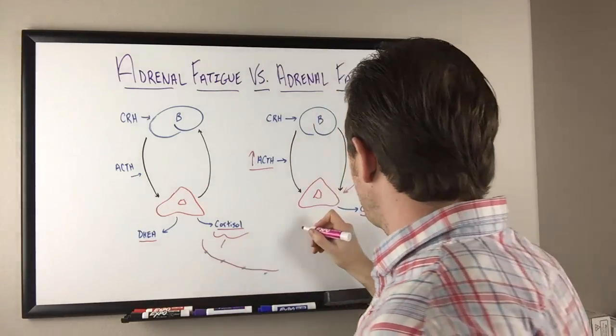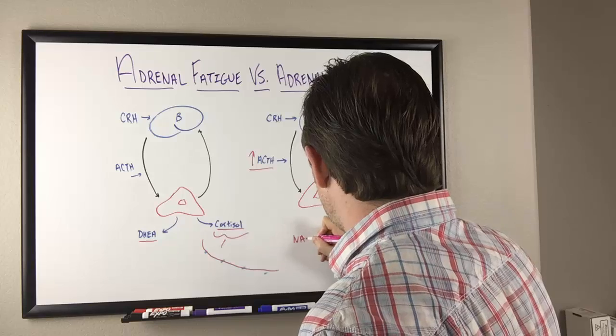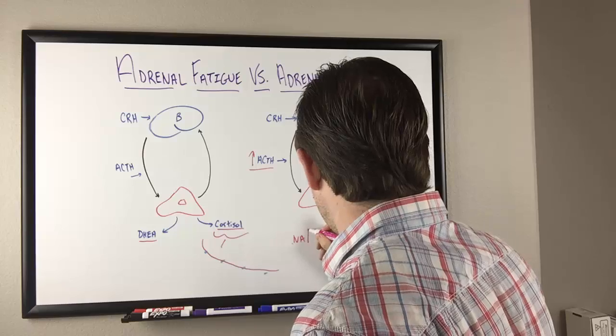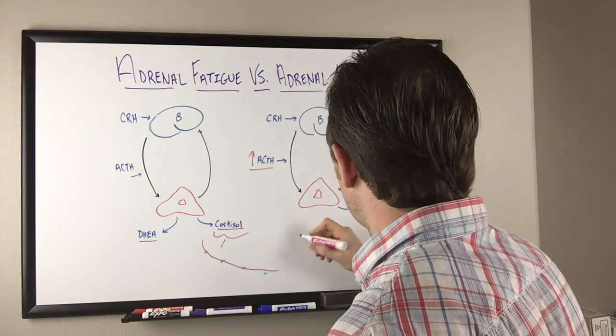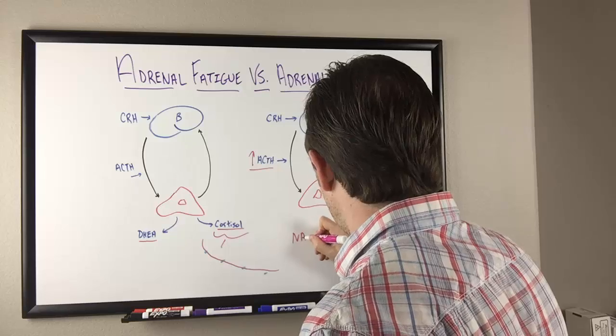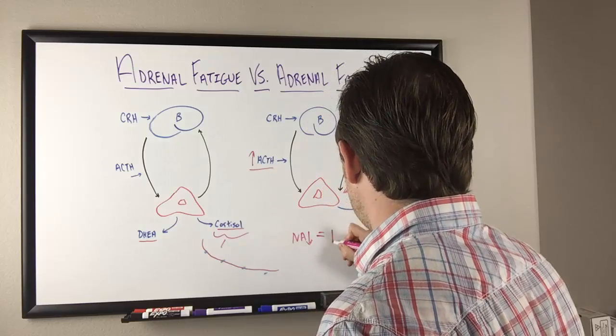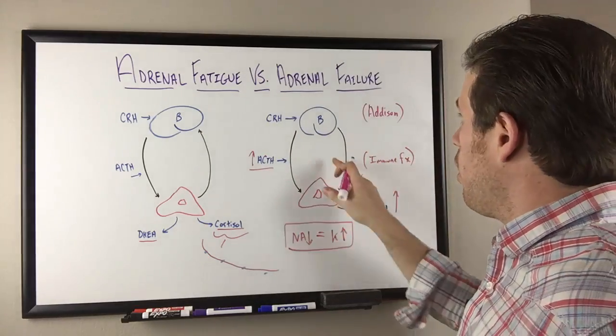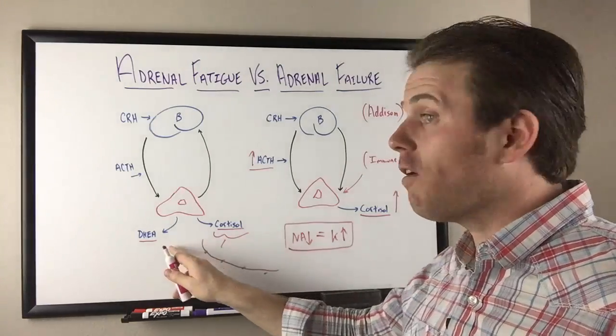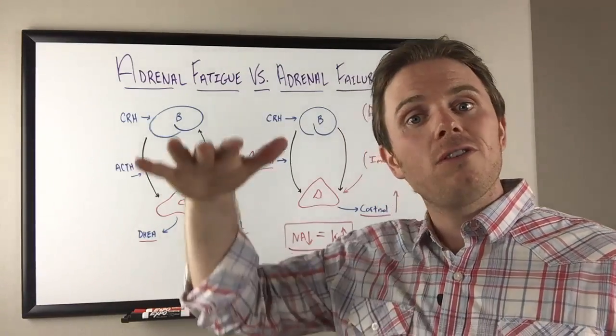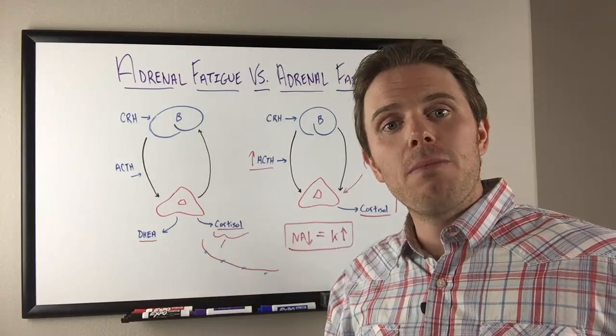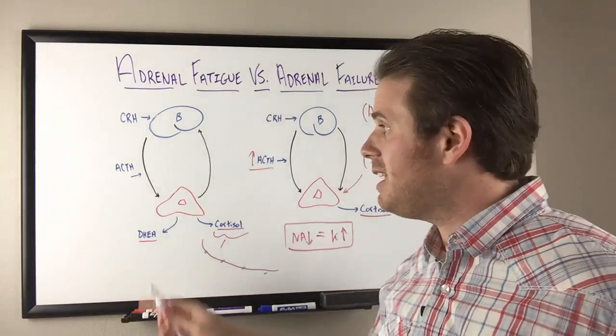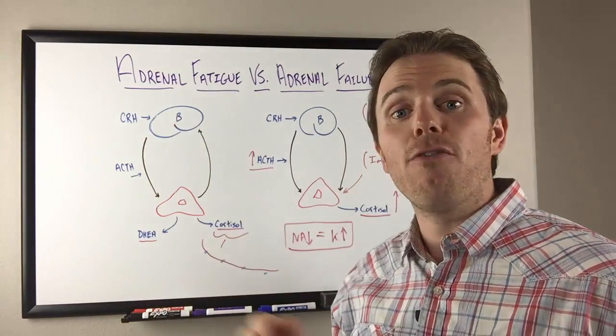We'll also start seeing problems with sodium and potassium. We see sodium goes low and potassium goes high. That's one of the things we'll start to see on a blood test. We can use functional blood chemistry to pick this up in the adrenal fatigue side before it becomes an issue.